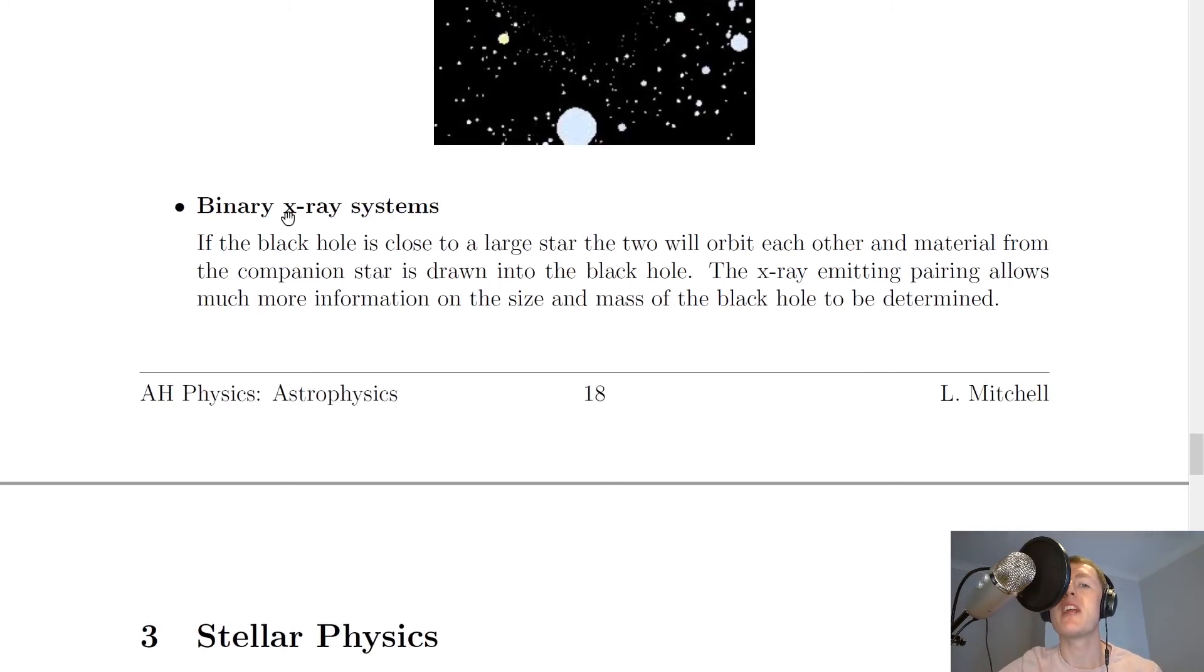And lastly, we have binary X-ray systems. If the black hole is close to a large star, the two will orbit each other and material from the companion star is drawn into the black hole. The X-ray emitting pairing allows much more information on the size and mass of the black hole to be determined.